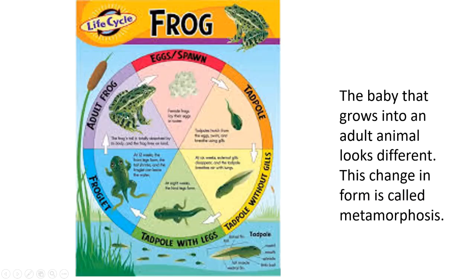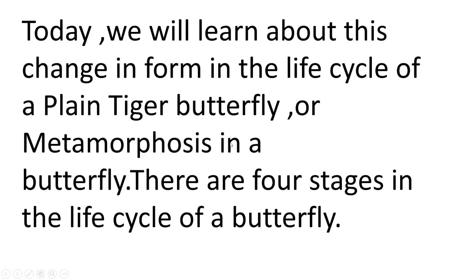Here I have a frog, and when it was small — a baby — it looked very different. The baby and the adult look different. So when a baby grows into an adult animal and looks different, this change in form is called metamorphosis. Today we will learn about this change in form in the life cycle of a Plain Tiger butterfly.